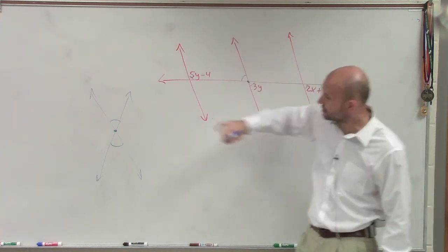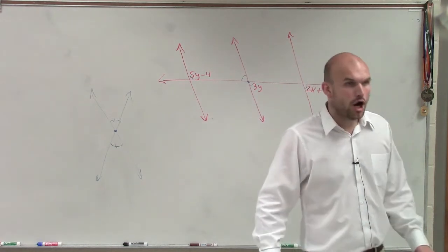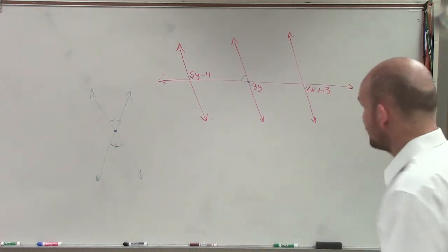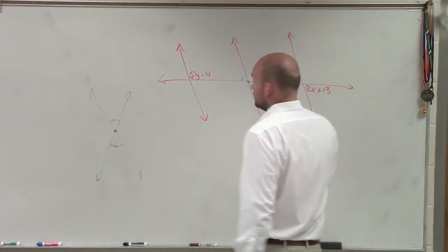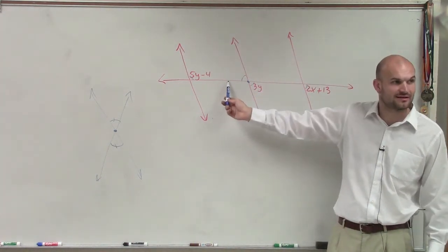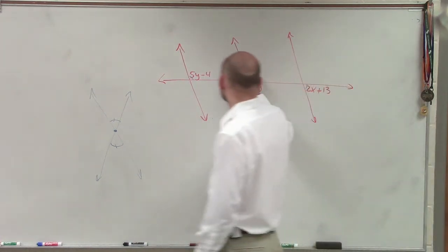The one thing to know about vertical angles is that they are equal in measure. All vertical angles are equal in measure. So therefore, if this is 3y, Guillermo, what does this have to be? 3y. Because they're vertical angles.